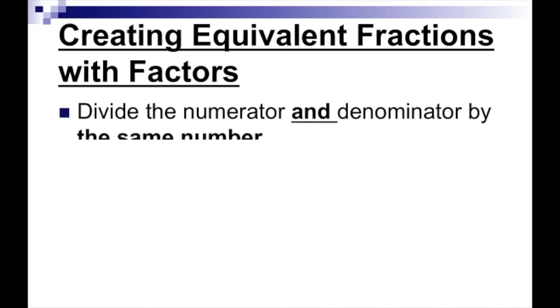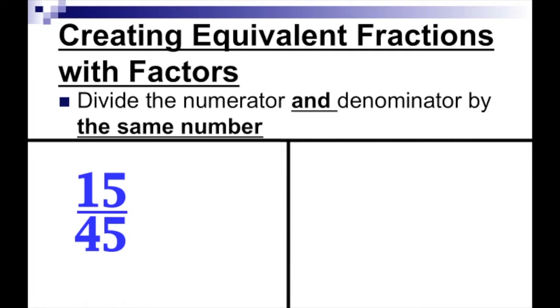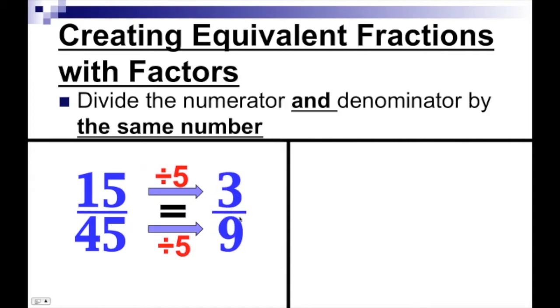Now let's take a look at creating equivalent fractions with factors. This time instead of multiplying, you divide the numerator and denominator by the same number. For fifteen over forty-five, we need a common factor — what number can divide both fifteen and forty-five? I'm going to pick five. Fifteen divided by five and forty-five divided by five gives us three over nine. So fifteen over forty-five is equivalent to three over nine.